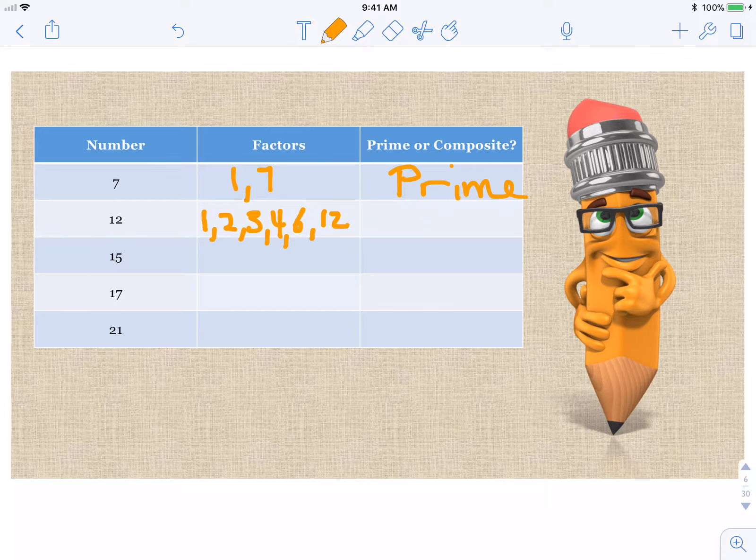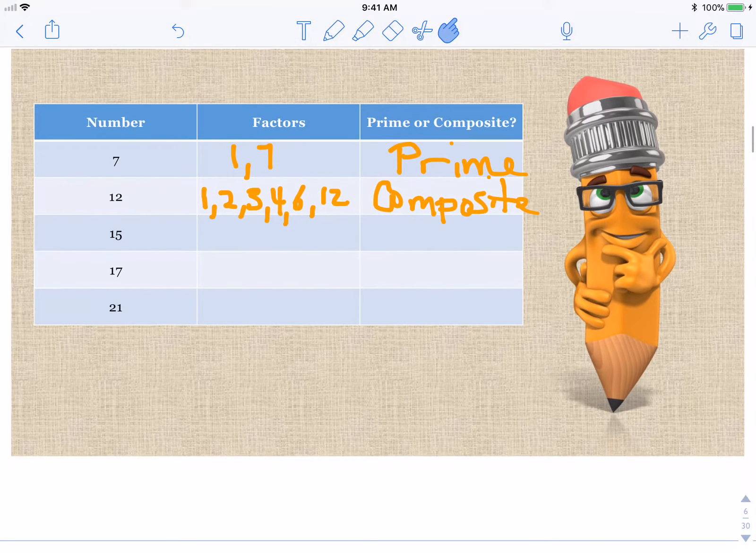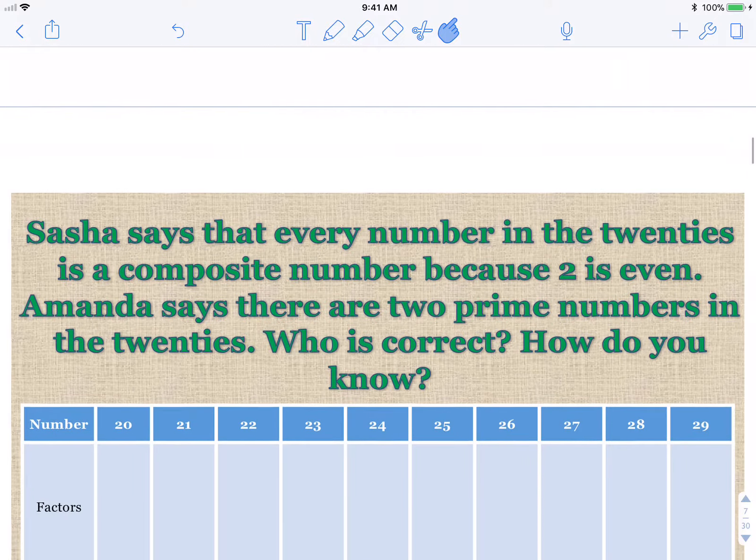Let's look at 12. One and 12, two and six, three and four. Five? Nope. And then now we're hitting six again. So 12 has one, two, three, four, five, six. 12 has six factors. It is a composite.